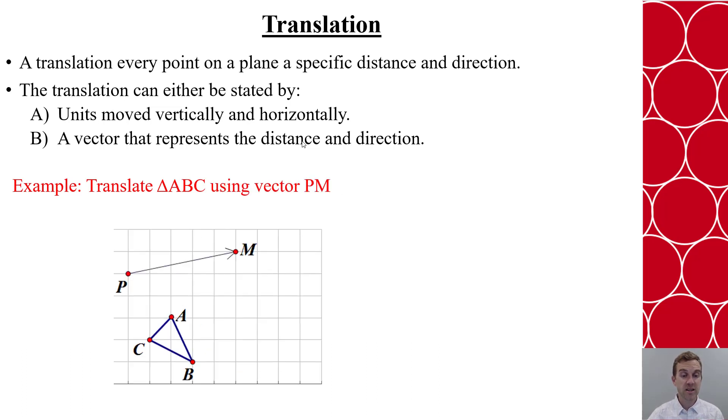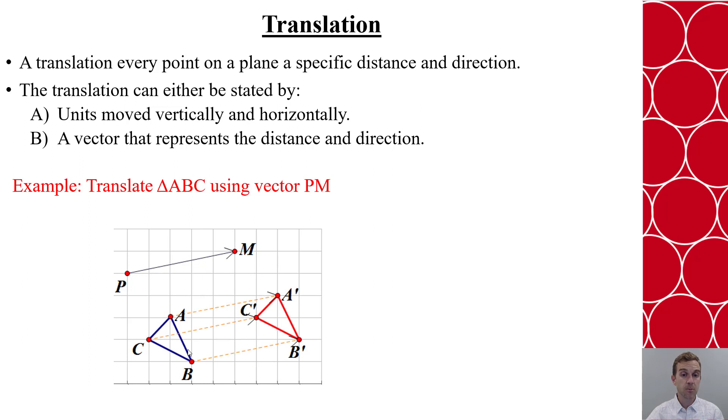In another example, say I want to translate using the vector PM. Now I can recognize by this vector that it goes up one and to the right five. I could also take this vector and attach it to each of these three points to help me see that translation. And that's where the points A prime, B prime, and C prime would be for the translated triangle.